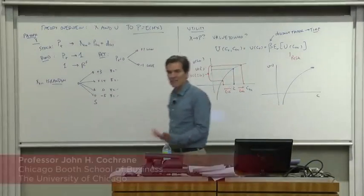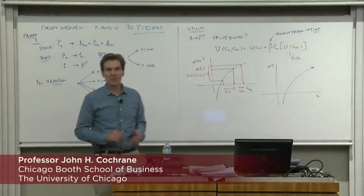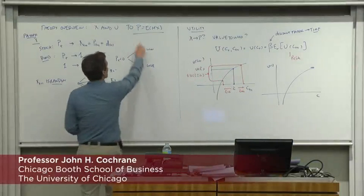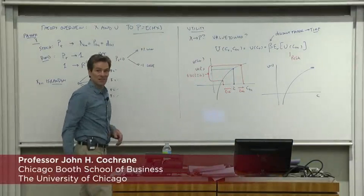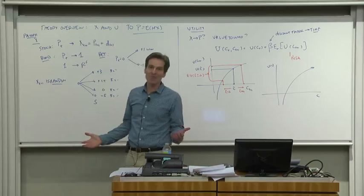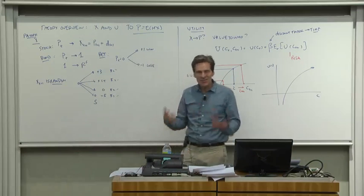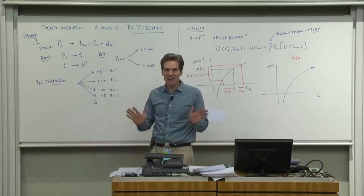Our objective is to get to the basic formula from which all asset pricing follows: p equals E of mx. What does all this stuff mean? The way you get to any formula is first understand the players and how it works, then do the derivation.